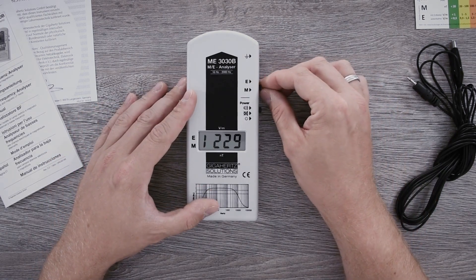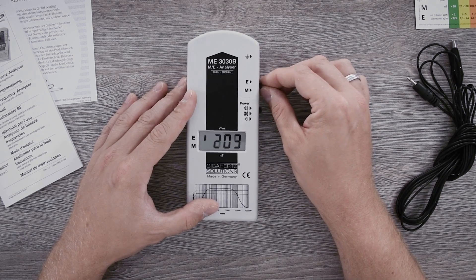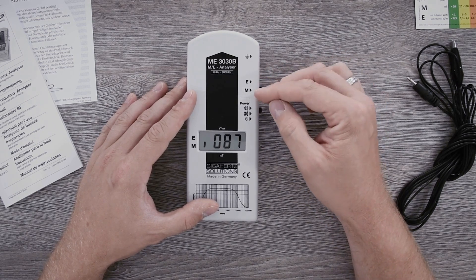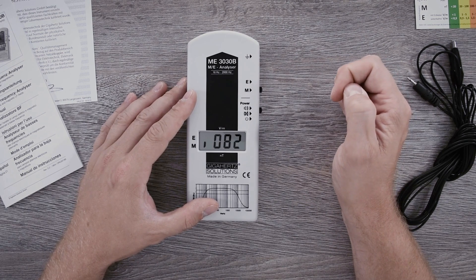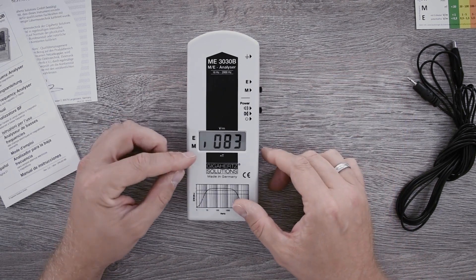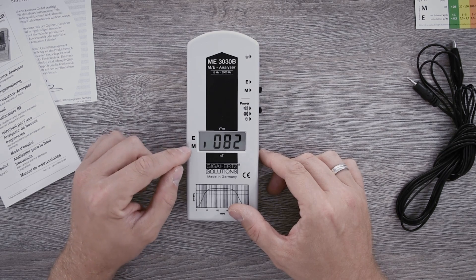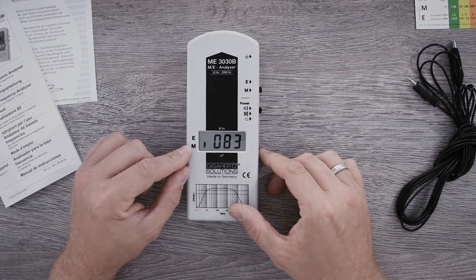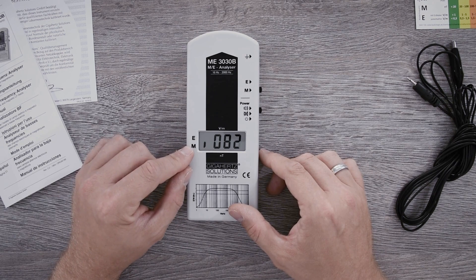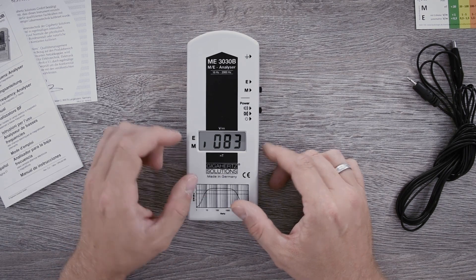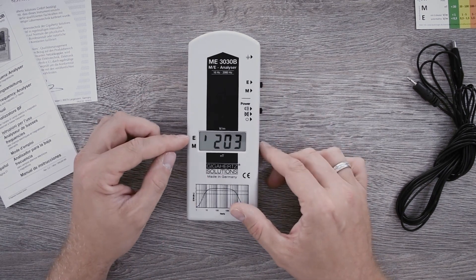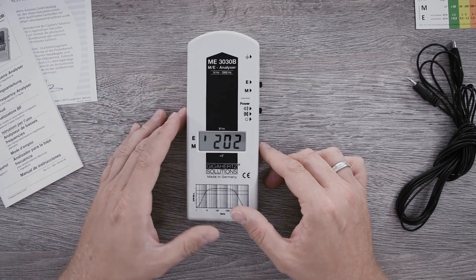Via the signal switch up here, you can now choose between E for electrical field and M for magnetic field. Depending on your choice, you can see this little line in the display symbolizing if the measurement is active in E or M as well. The magnetic field is measured in the unit nanotesla, and the electric field in the unit of volt per meter.